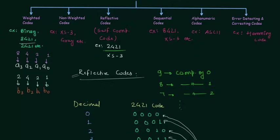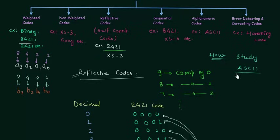This is all for this presentation. For the homework problem, you have to study the American Standard Code for Information Interchange (ASCII). I am giving this as a homework problem because I am not going to cover ASCII in this course — I will cover the rest of the codes but not this one. So it is better that you complete this as your homework. See you in the next one.